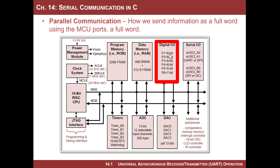If you wanted to read any information, you could simply read from port one. The advantage of that is you get eight bits of information in essentially one instruction, so it's a way to transfer a lot of information. The downside, of course, is that it takes a pin for every bit within the word. So while you can transfer eight bits at a time, you use a lot of pins, and sometimes on an MCU you don't have a ton of extra pins to use.